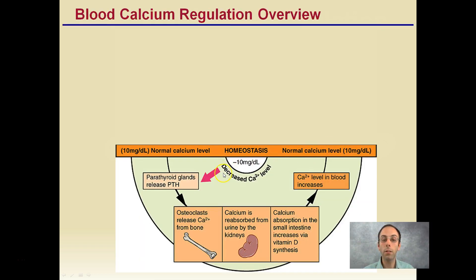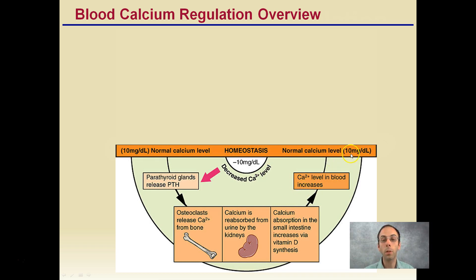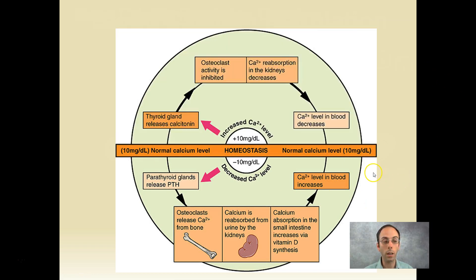Now if the opposite occurs and we have a decrease in calcium level, the parathyroid glands release PTH, which is a hormone. This will cause osteoclasts to release calcium from bone, calcium is reabsorbed from the urine by the kidneys, and calcium absorption in the small intestine increases via vitamin D synthesis. These three events will cause calcium levels in the blood to increase, hopefully bringing that level back up to 10 milligrams per deciliter. This is a general overview — we're going to look at this in a little bit more detail.